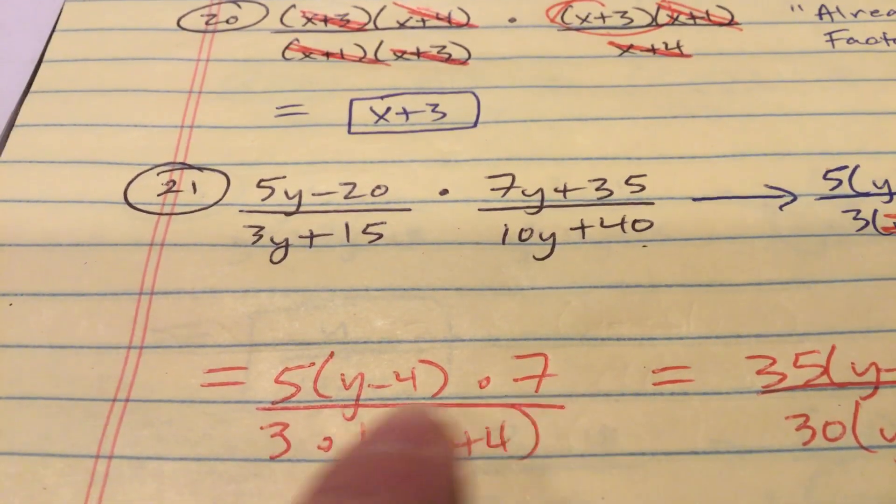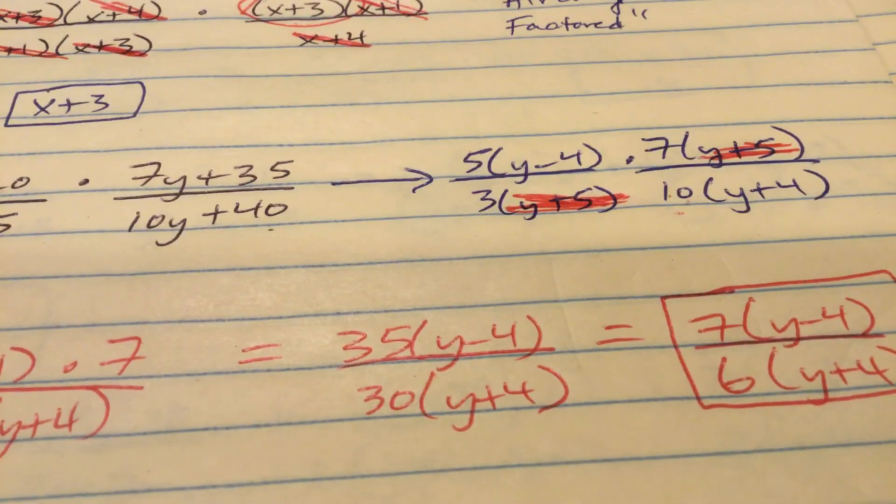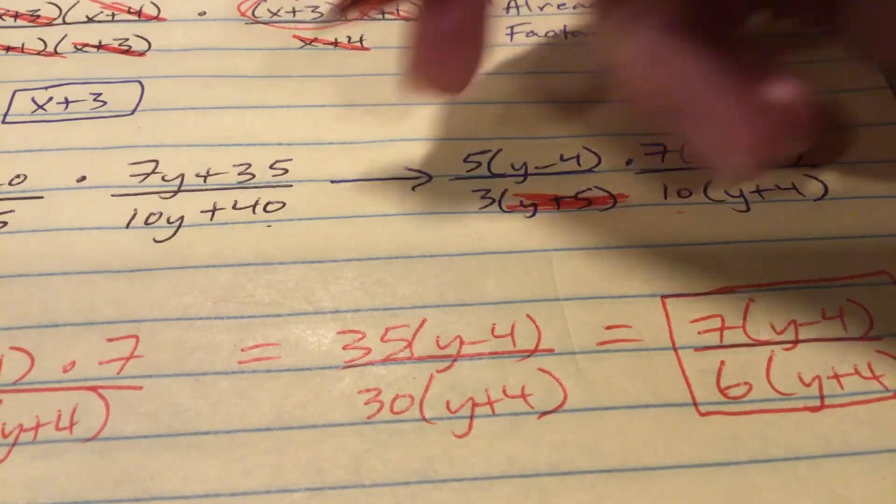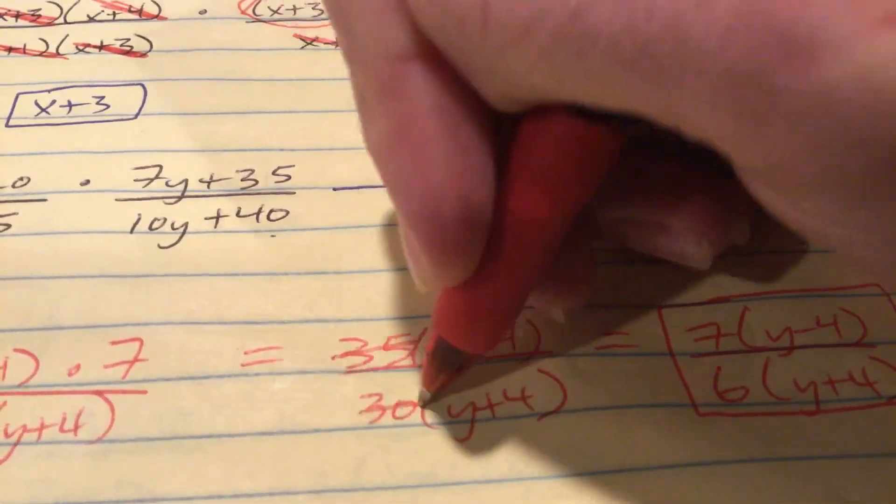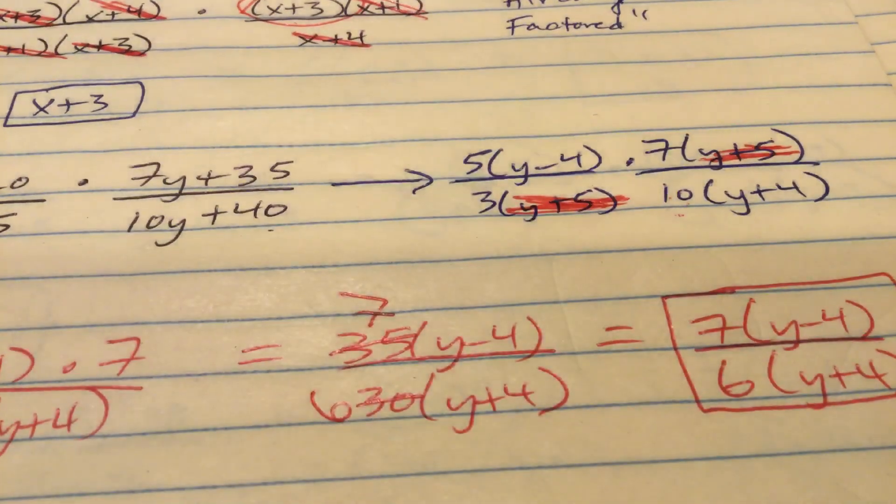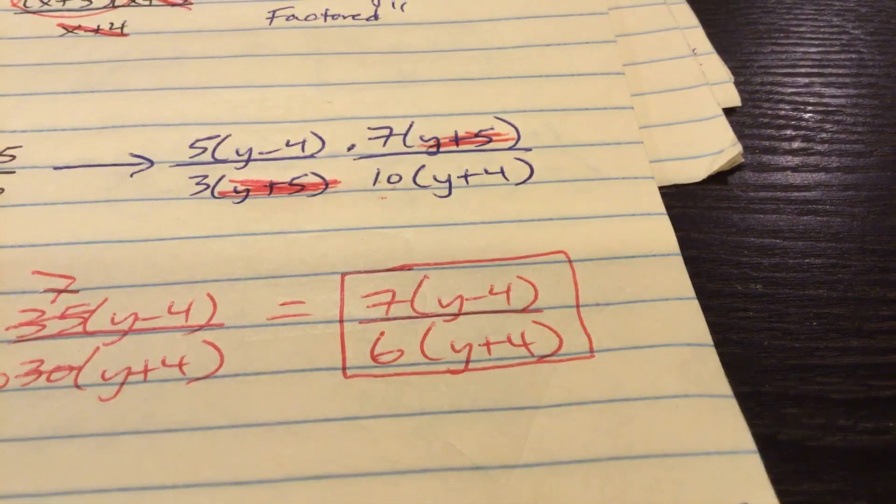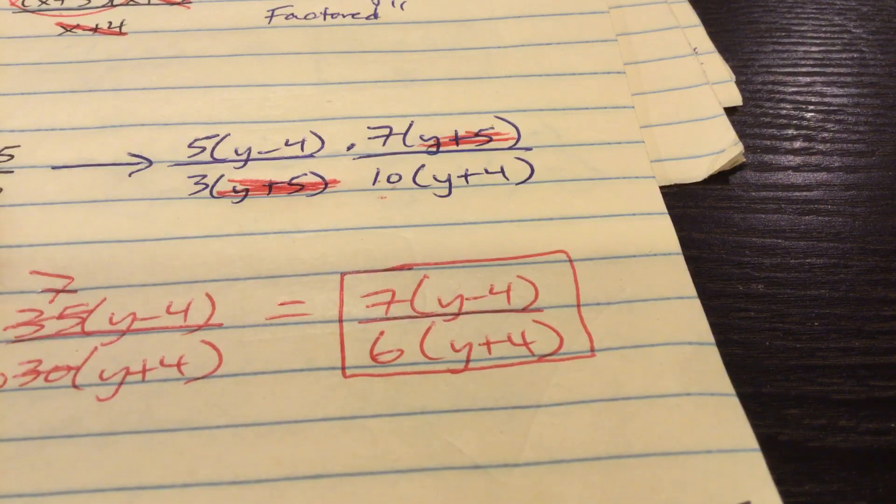I just put, so what's going to remain up top? The 5 times y minus 4 times 7. What's going to remain at the bottom? The 3 times 10 times y plus 4. And what I did, I just multiplied everything together. It's going to give me 35 y minus 4. It's going to give me 30 y plus 4. Then, no matter how you do it, you could have done this originally, 35 and 30, I can both divide them by 5. 7 is up top with the y minus 4. 6 is down below with the y plus 4. There you go. Alright. Those are the first four for us. Again, pause this any time you need.